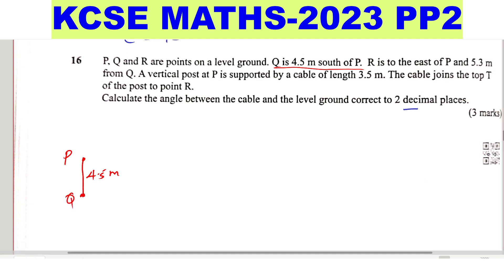Then R is to the east of P. So R is to the east of P like that. So assume that R is there, east of P and 5.3 meters, 5.3 meters from Q. So from Q is distance here. This one is 5.3 meters. A vertical post at P is supported by a cable. A vertical post at P. So let me draw a vertical post at P.